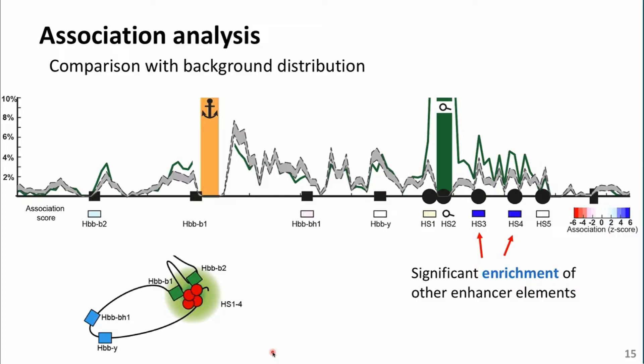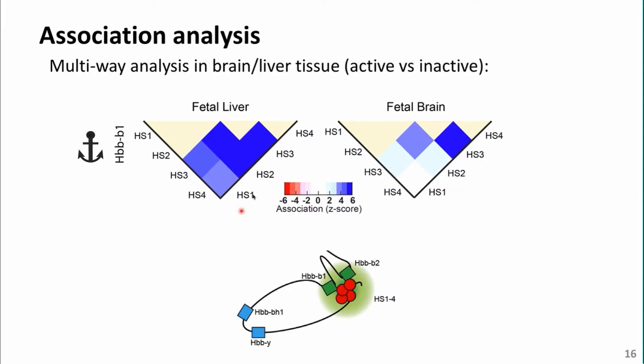Applying this test on beta-major with HS2, we could see that HS3 and HS4 are significantly enriched when HS2 is contacting beta-globin, meaning these hypersensitive sites are co-captured and significantly enriched when HS2 is contacting beta-major. We can select SOI from different hypersensitive sites — when we select HS1 as the SOI, the same enrichment phenomenon appears, shown here in blue indicating positive association.